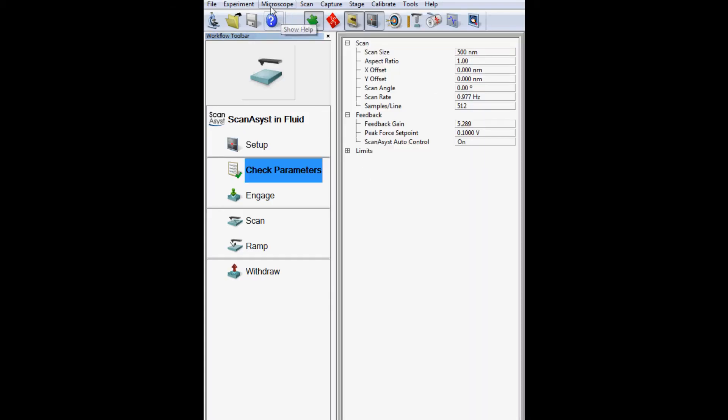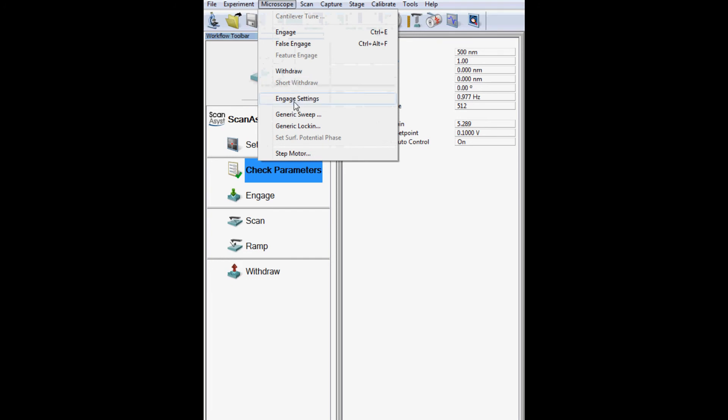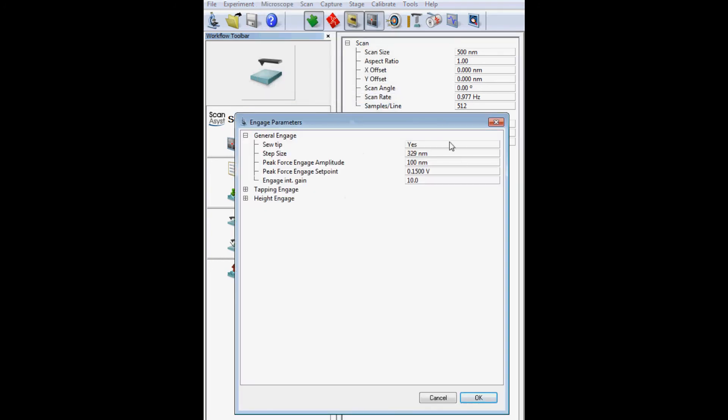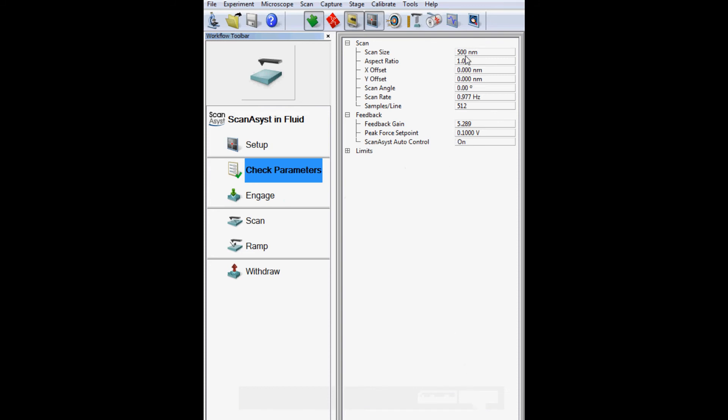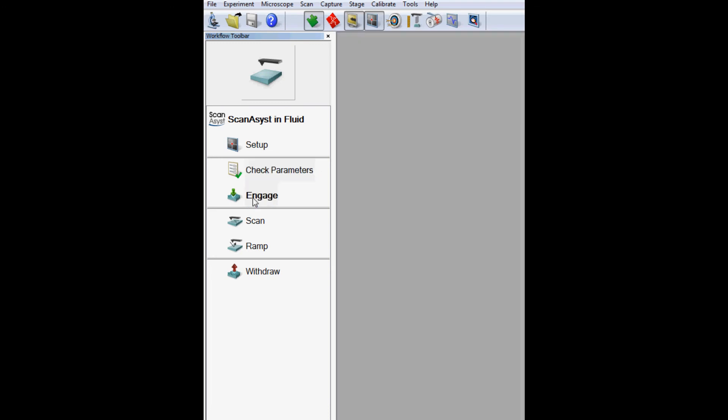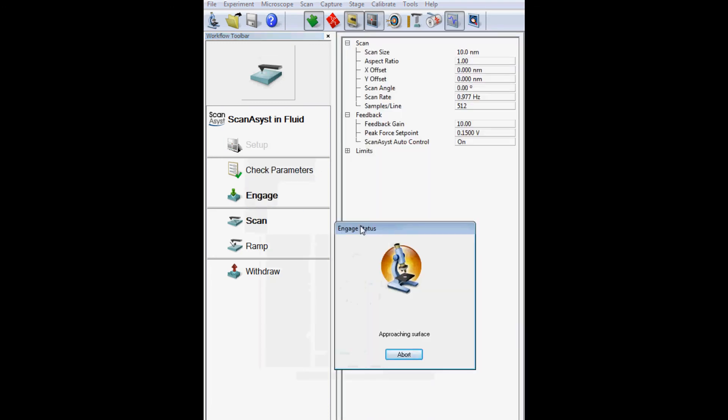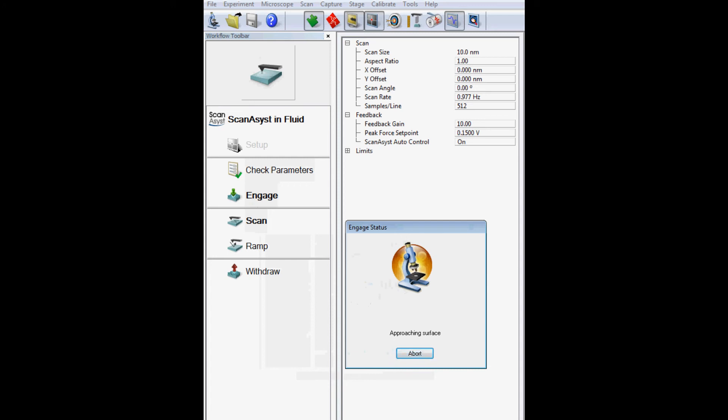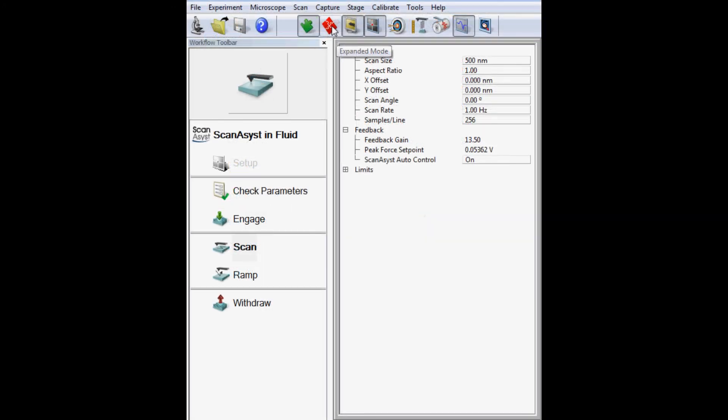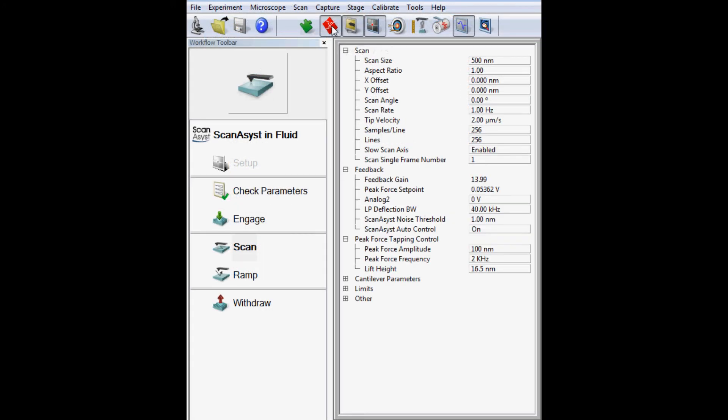Check the engage settings from the microscope pull-down menu to make sure they are normal. Verify that the scan parameters are normal and initiate the engage sequence. After the tip engages the sample, optimize the scan parameters as needed and begin the image acquisition.